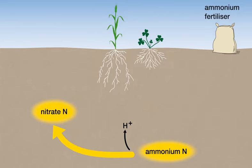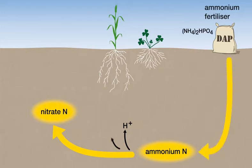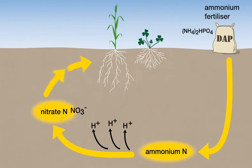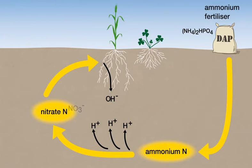One molecule of di-ammonium phosphate fertilizer contributes three hydrogen ions and two nitrate ions. When nitrate, which is negatively charged, is taken up by plants, a hydroxide ion, also negatively charged, is released from the plant, maintaining the electrical balance in the root cells. If both nitrate ions from our molecule of di-ammonium phosphate were taken up, two hydroxide ions would be released.